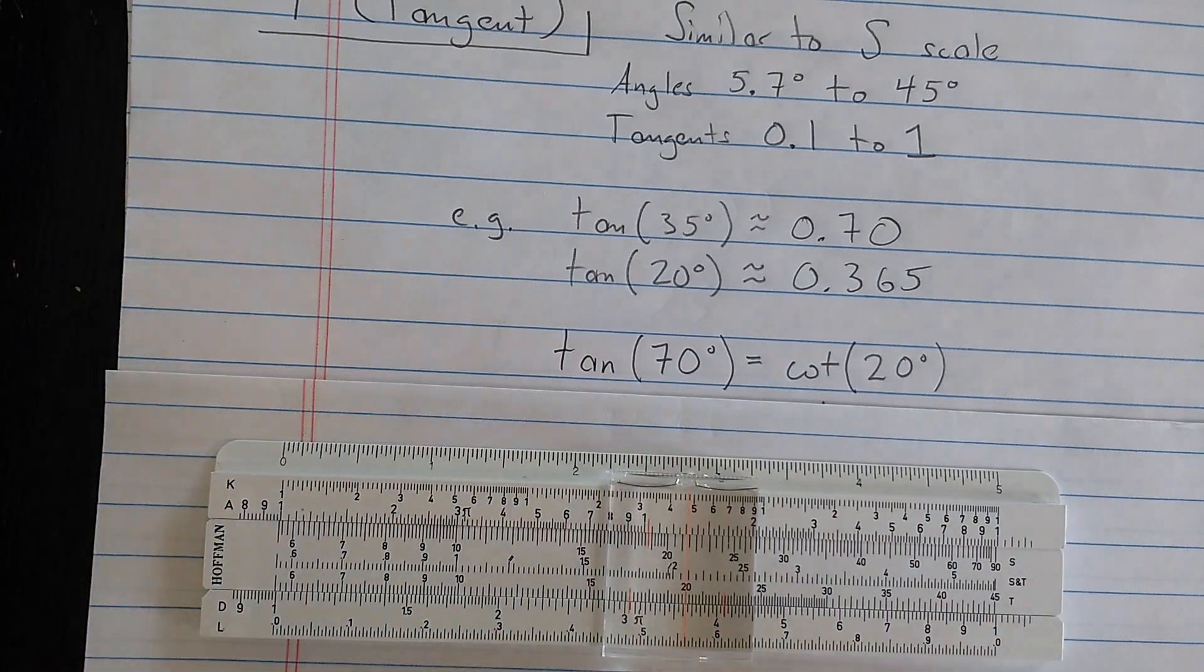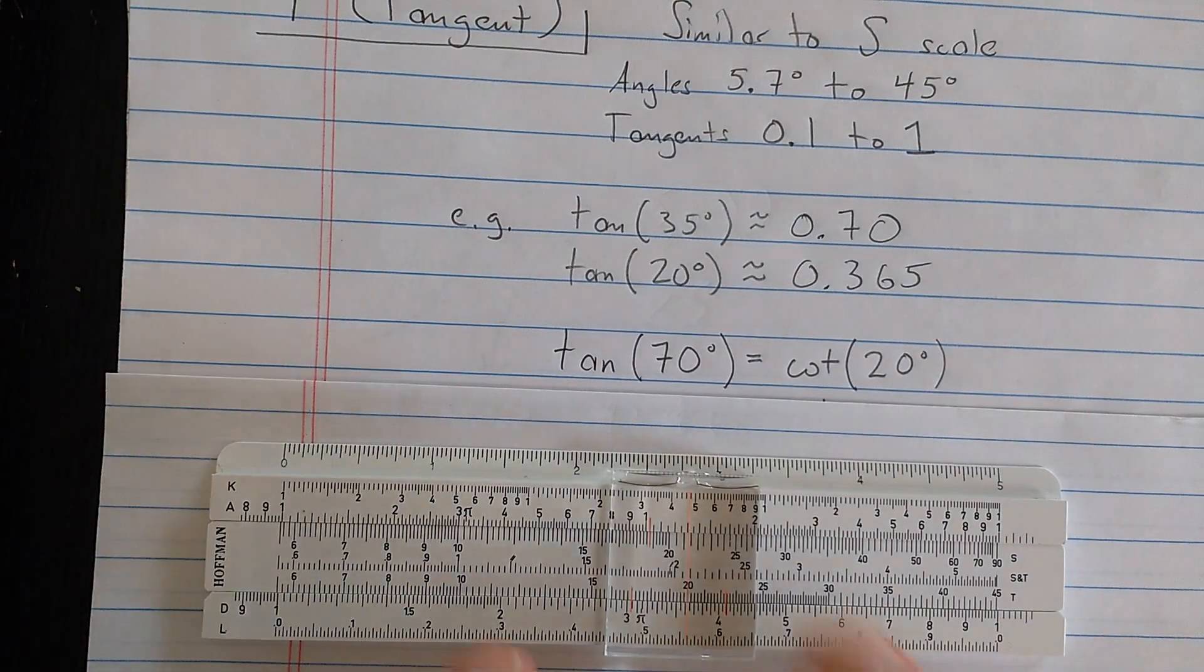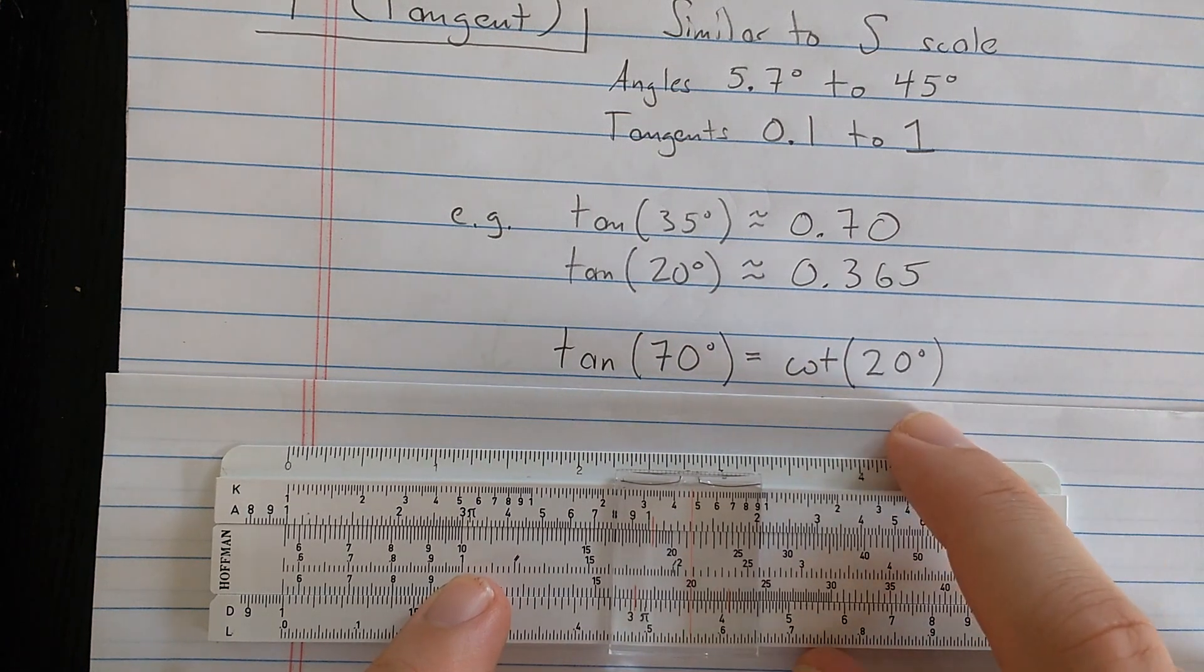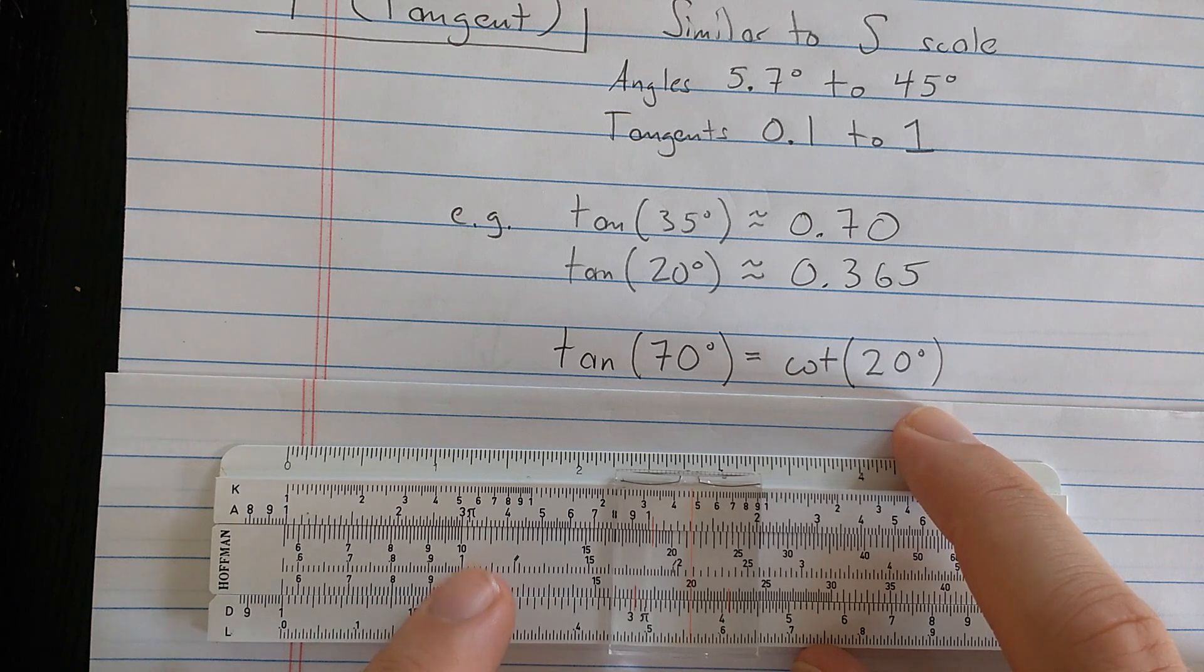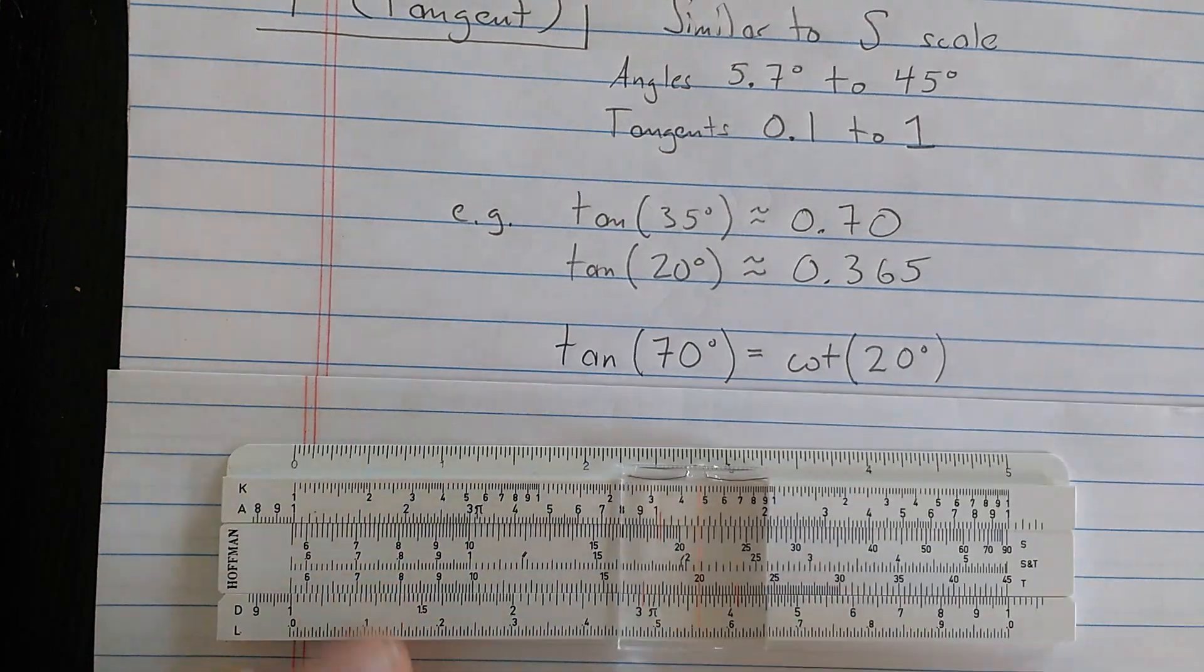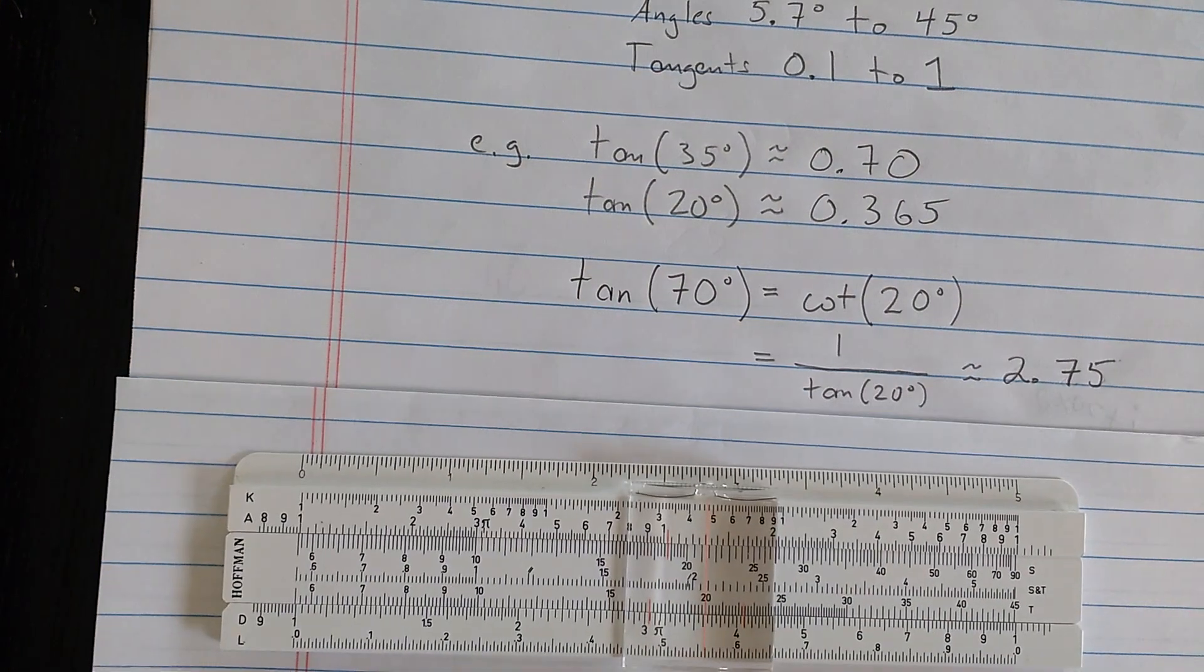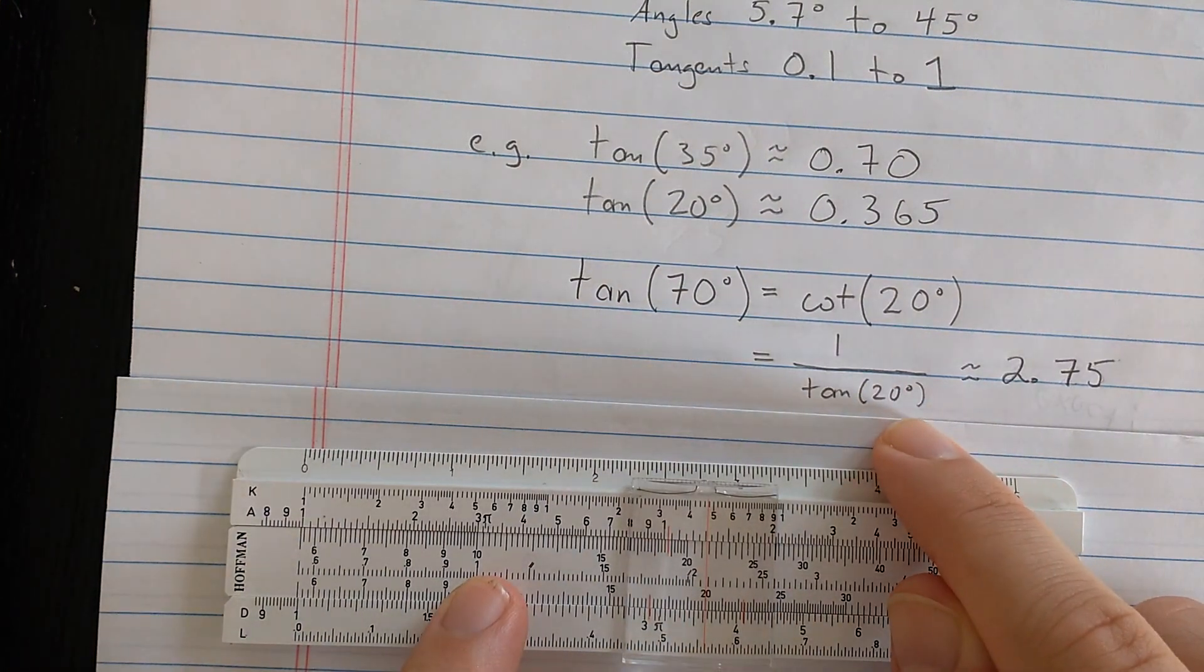Here's a good question. What if I want a tangent of an angle between 45 degrees and 90 degrees? Well, I could use cotangent. Again, cotangent is the tangent of the complement. So that would be cotangent of 20 degrees. Problem is, I still can't find that on the scales. So what do I do? Well, cotangent is 1 over tangent.